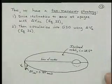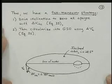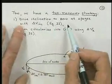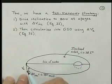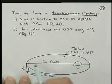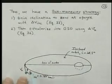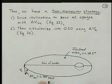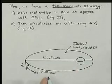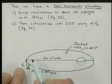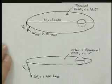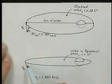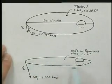So what we've done is we used a two-maneuver strategy. First, we drove the inclination to zero at apogee over here. We had VA, and we did a delta V basically perpendicular to the equatorial plane of 0.785 kilometers per second, and that changed this inclined orbit into this equatorial orbit.